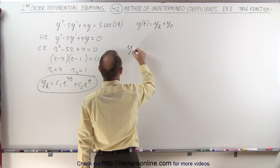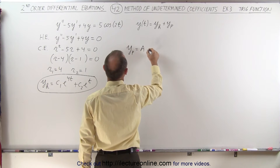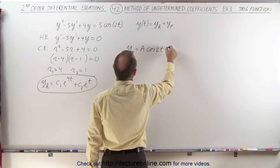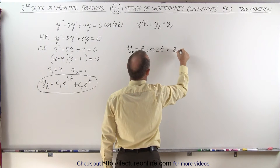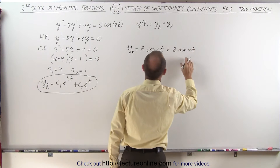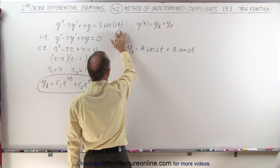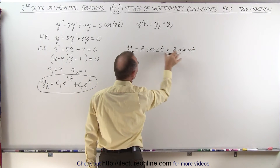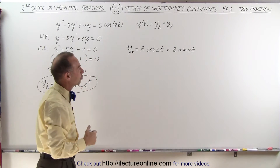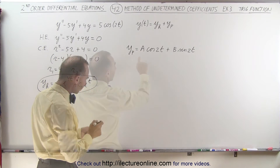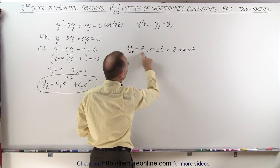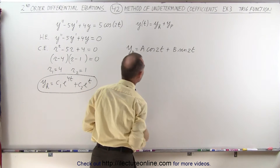The particular part of the solution will take the form: y_p equals A times cosine of 2t plus B times sine of 2t. Even though we don't have a sine function in the original equation, we represent both the cosine and the sine to come up with the correct particular solution. Now we need to find the two undetermined coefficients, A and B.